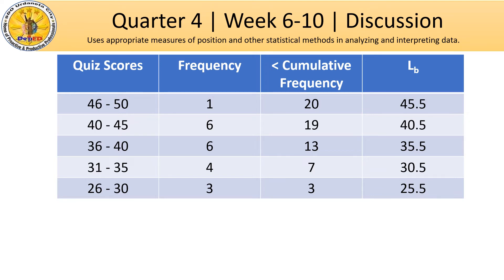The next thing we have to determine is the class size or class interval, which is I. We just have to choose two consecutive data — for example, 35 minus 30 equals 5. You choose two consecutive upper boundary or lower boundary values: 30 and 35, or 35 and 40, 40 and 45, 45 and 50 — any of those will give you the same class size interval.